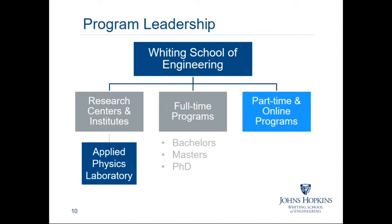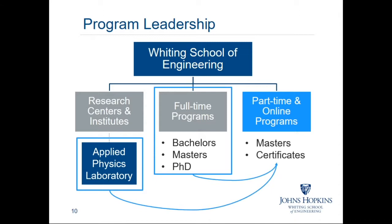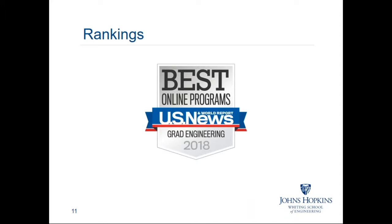In addition to our part-time programs, the Whiting School of Engineering has over 25 research centers and institutes, including our strong partnership with the Johns Hopkins Applied Physics Laboratory in Laurel, Maryland. We also offer full-time bachelor's, master's, and PhD programs conducted in residence at our Homewood campus in Baltimore. Our online and part-time programs are led by respected senior engineers from our applied physics laboratory and faculty from our full-time programs. We are ranked in the top 20 best online graduate engineering programs by U.S. News and World Report, and we have the largest online part-time student population among all ranked schools. These rankings really speak to the quality of our programs and our school is experienced and well-equipped to help you navigate graduate education as an online student.